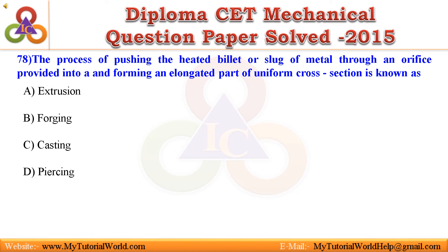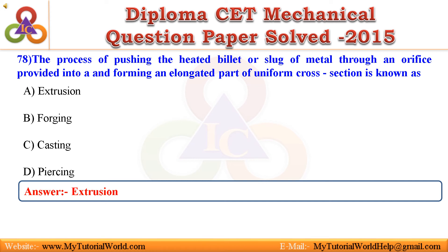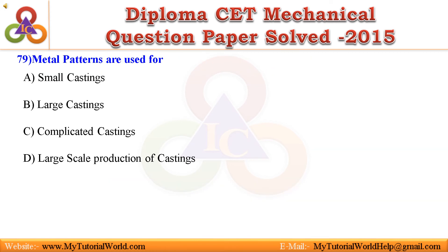Question 78. The process of pushing a heated billet or slug of metal through an orifice to form an elongated part of uniform cross section is known as: A. Extrusion, B. Forging, C. Casting, D. Piercing. Answer is Extrusion.